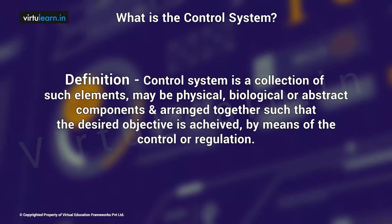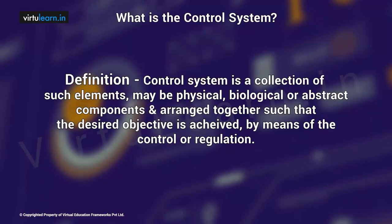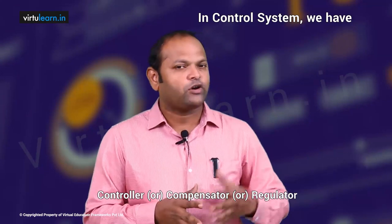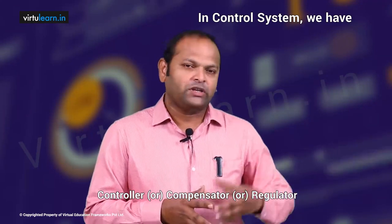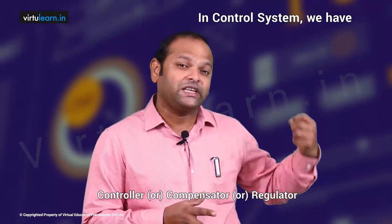A control system is a collection of elements — physical, biological, or abstract — arranged together such that the desired objective is achieved by means of control or regulation. Essentially, in a control system we have a controller, also called a compensator or regulator. The purpose of control is to ensure that the objective is properly reached.